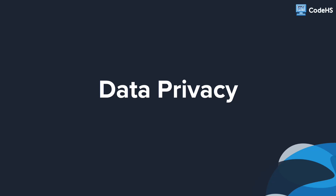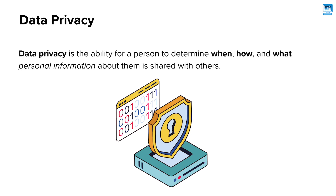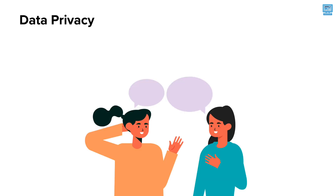In this video, we'll take a look at data privacy. Data privacy is the ability for a person to determine when, how, and what personal information about them is shared with others. Data privacy is similar to having a private, personal conversation with a friend — you both can decide not to share what was discussed with anyone else, so your conversation will remain private.